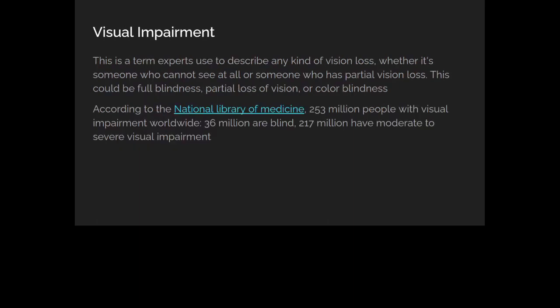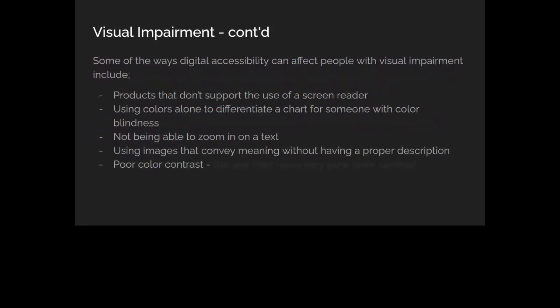Starting with visual impairment — a term experts use to define any type of vision loss, whether you're completely blind, have partial loss of vision, or color blindness. According to the National Library of Medicine, around 253 million people have some sort of visual impairment: 36 million are blind, 217 million have moderate to severe visual impairment. And it's also said that one in 12 men identify as colorblind — so if anybody tells you men don't know colors, it's not our fault, we are colorblind.